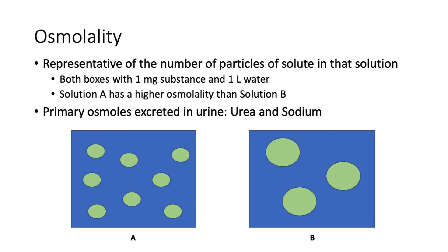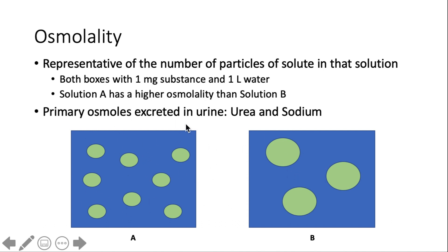Finally, let's touch on osmolality. Throughout renal pathophysiology, we discuss the number of particles of a solute in solution rather than weight or volume. For example, if solution A is sodium and solution B is B12, even though sodium is smaller, having more particles means higher osmolality. The primary osmoles excreted in urine are urea — the primary one — and sodium as a secondary contributor.